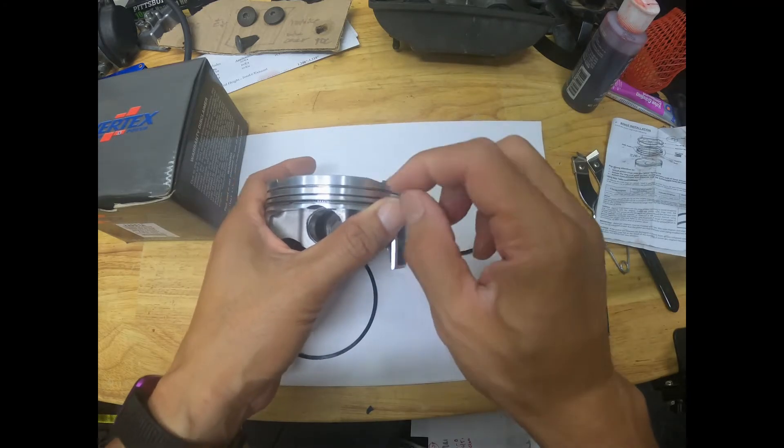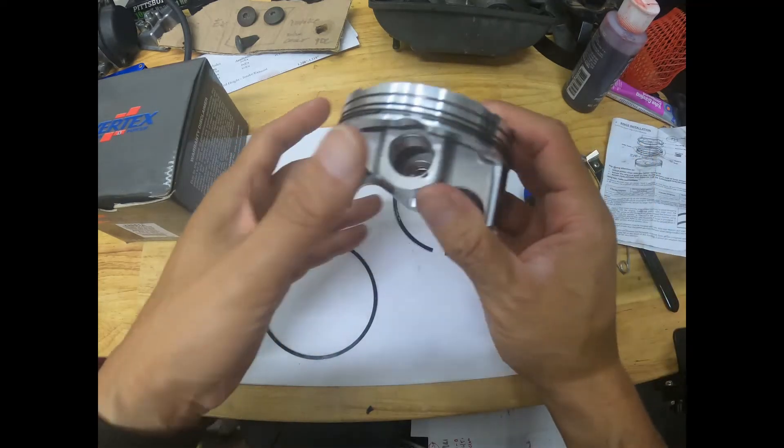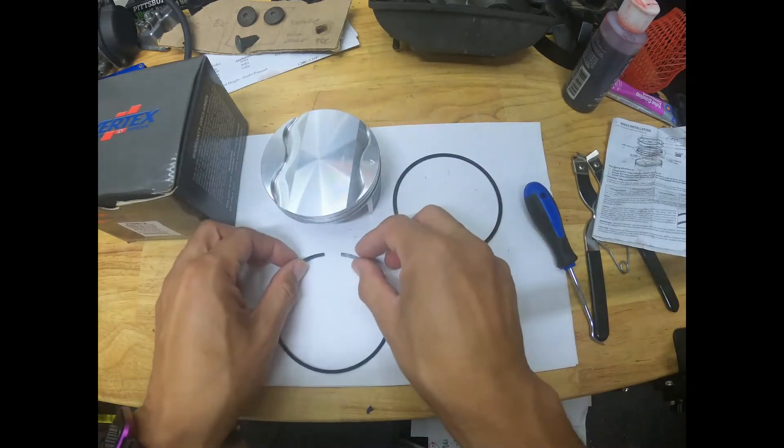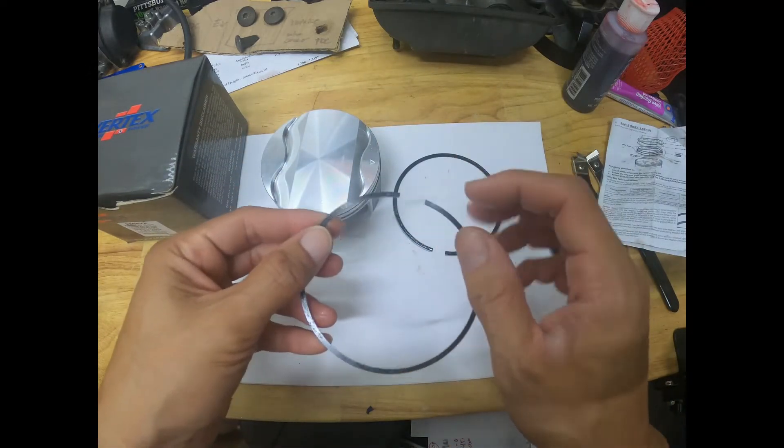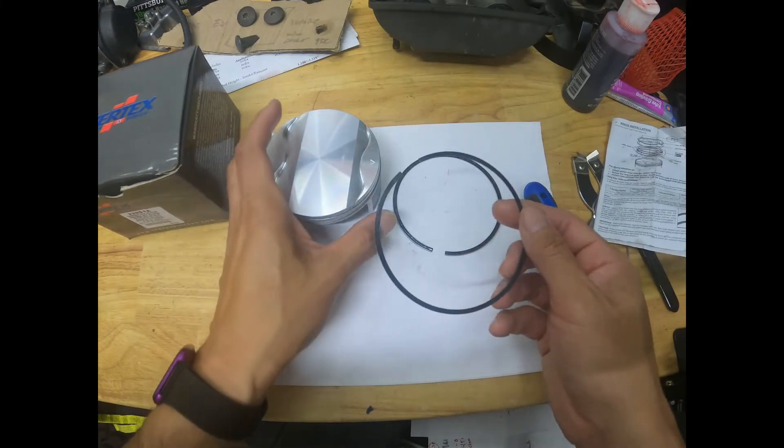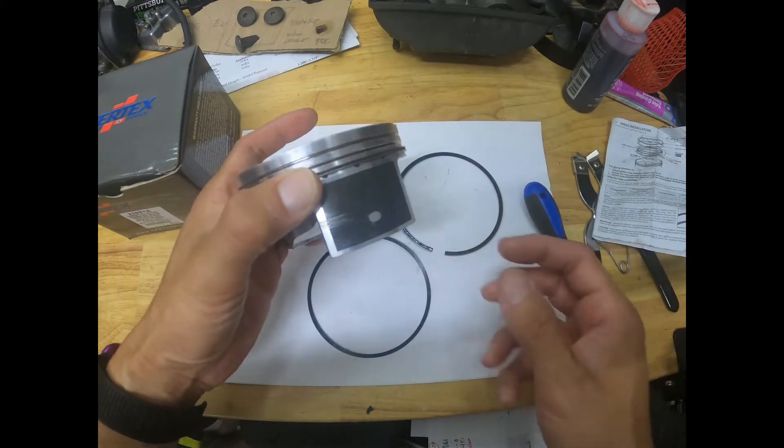The second ring will have a marking or a stamp. It will go in the upward position and it would be the secondary ring.